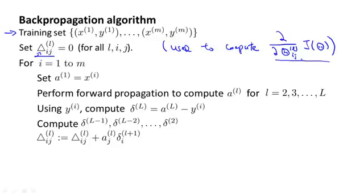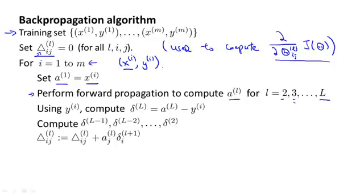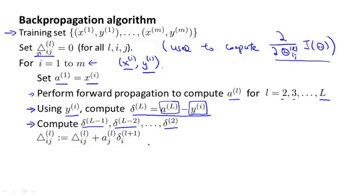Next, we're going to loop through our training set. For i equals one through m, we're going to be working with the training example xi, yi. The first thing we do is set a1, the activations of the input layer, equal to xi. Then we perform forward propagation to compute the activations for layer 2, layer 3, and so on up to the final layer, capital L. Next, we use the output label yi to compute the error term delta L for the output layer — delta L is the hypothesis output minus what the target label was. Then we use the backpropagation algorithm to compute delta L minus 1, delta L minus 2, and so on down to delta 2. There is no delta one because we don't associate an error term with the input layer.